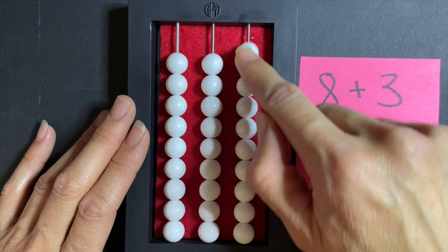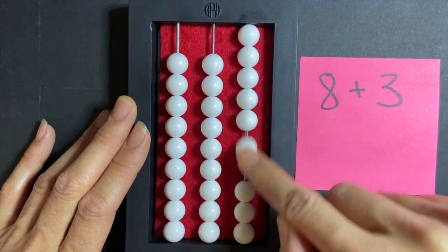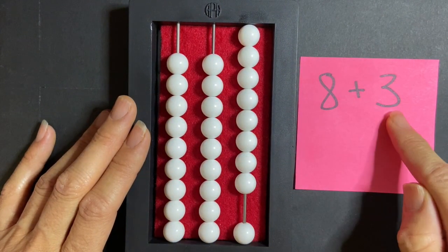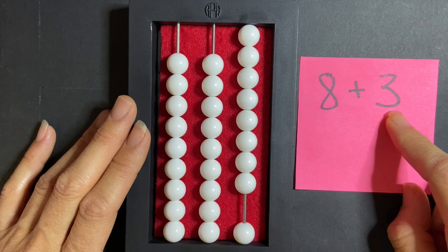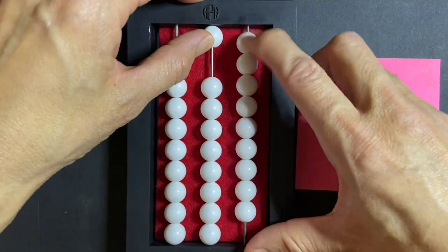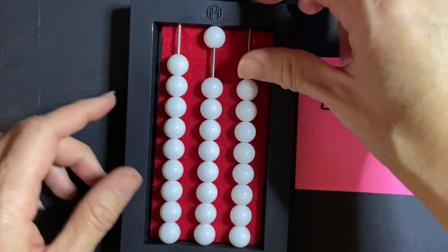I'm going to set my first addend 8. 1, 2, 3, 4, 5, 6, 7, 8. And I'm going to add 3. I'm going to show you how we add the 3. 1, 2, 3. That's eventually how we want them to do it.